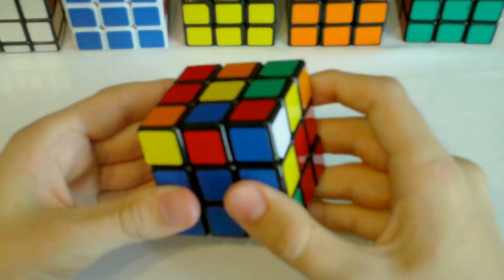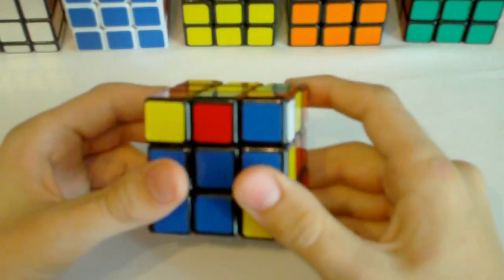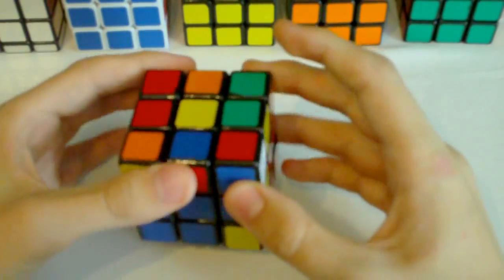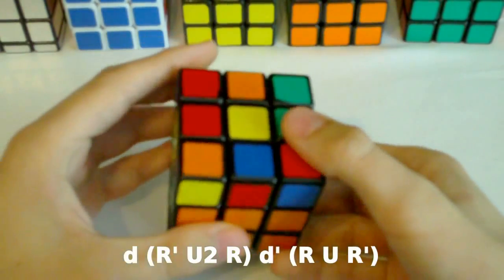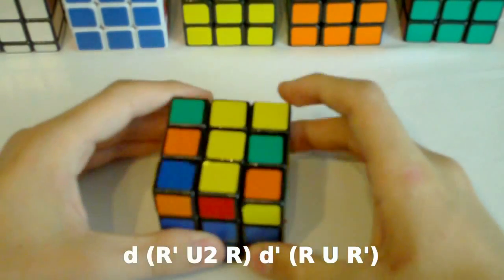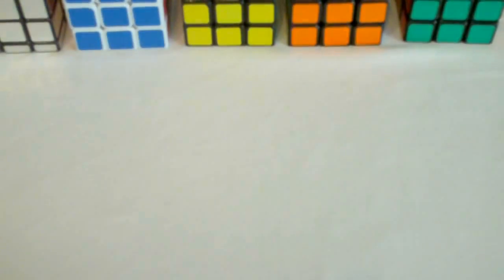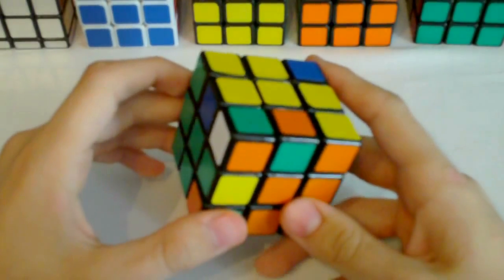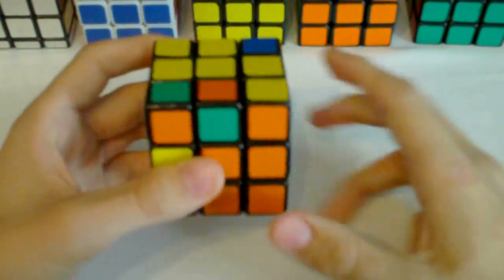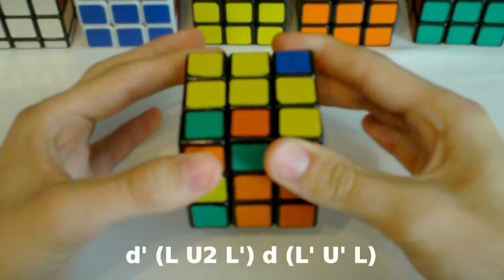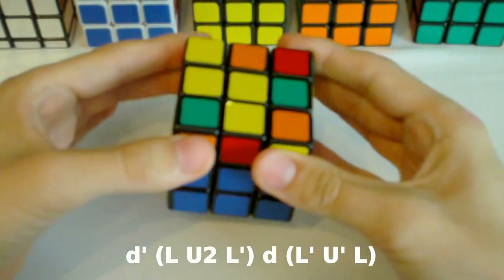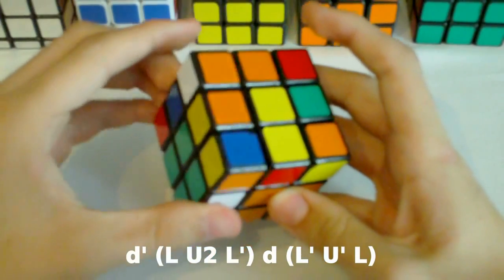Now you may think you know this case already but all those u moves and y rotations can actually be turned into lowercase d moves. So here is the algorithm for this case: lowercase d r' u2 r lowercase d' r u r'. So yeah you insert that at the end. And then we have the mirror of that case. So it's pointing towards the left and the white sticker is pointing towards the left and you do lowercase d' l u2 l' lowercase d and then you just insert this: l' u' l.